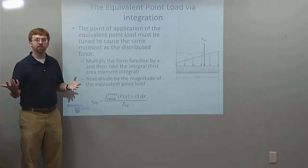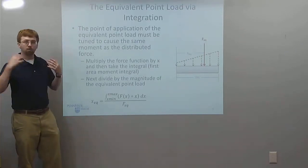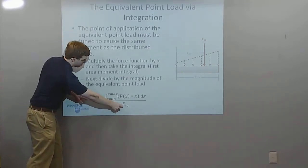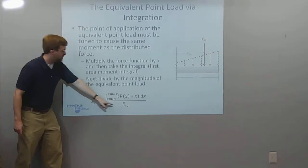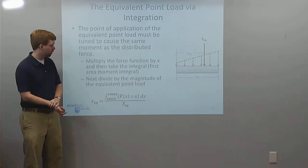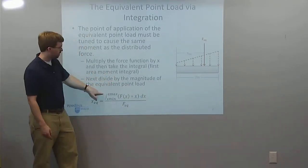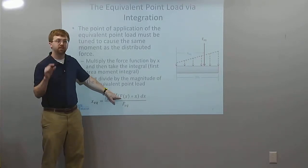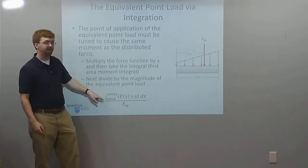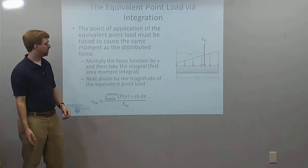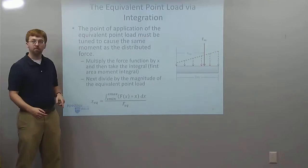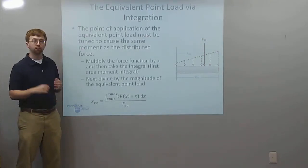That gives me my X_EQ value. You might wonder where this formula comes from — really, we're just balancing the two moments. If I multiply both sides by F_EQ, I get F_EQ times X_EQ, which is force times distance — the moment of the equivalent point load. That equals the integral of f(x) times x, which sums up all the little moments from each tiny piece of the distributed force. So all those little moments must equal the moment created by the equivalent point load.